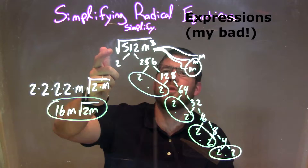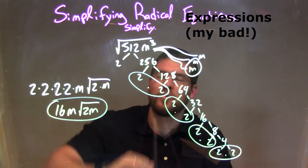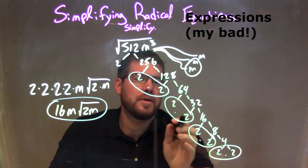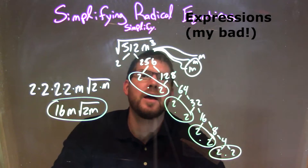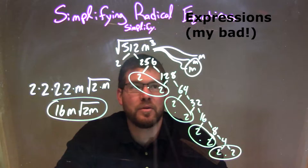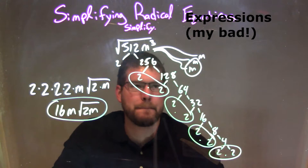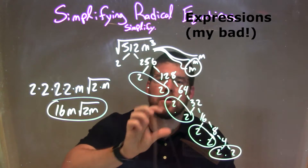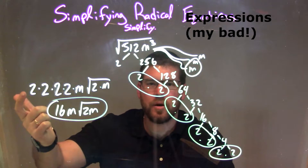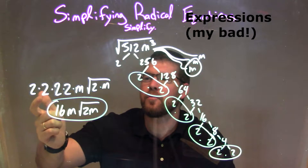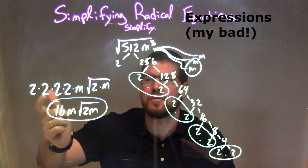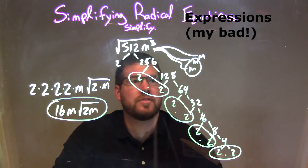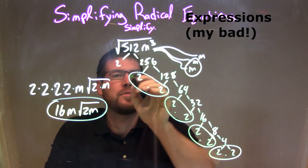So to recap: we're taking the square root of 512m to the third power. We did a prime factorization of 512 and got 2 times 2 times 2 times 2 times 2 times 2 times 2 times 2, and a prime factorization of m to the third power, which is m times m times m. We then circled our pairs — four pairs of twos and one pair of m's. Every circled pair puts one number on the outside of the square root, giving us 2 times 2 times 2 times 2 and one m. Inside the square root we're left with the singles, the ones that weren't circled: the square root of 2 times m.